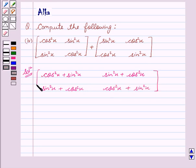Now as we all know that sin square theta plus cos square theta equals 1. Therefore, in place of cos square x plus sin square x, we can write 1.